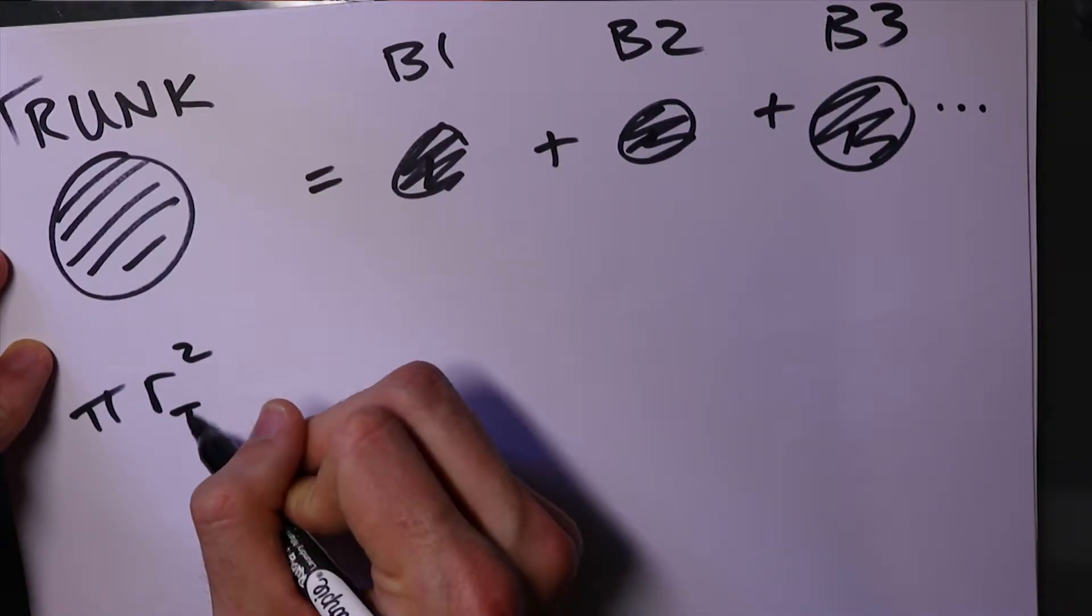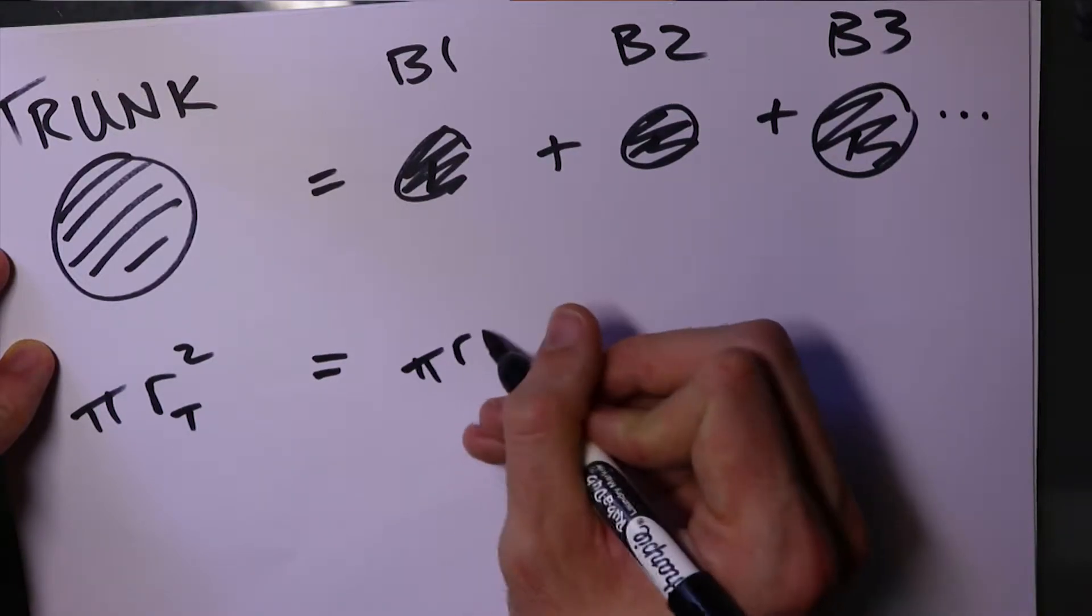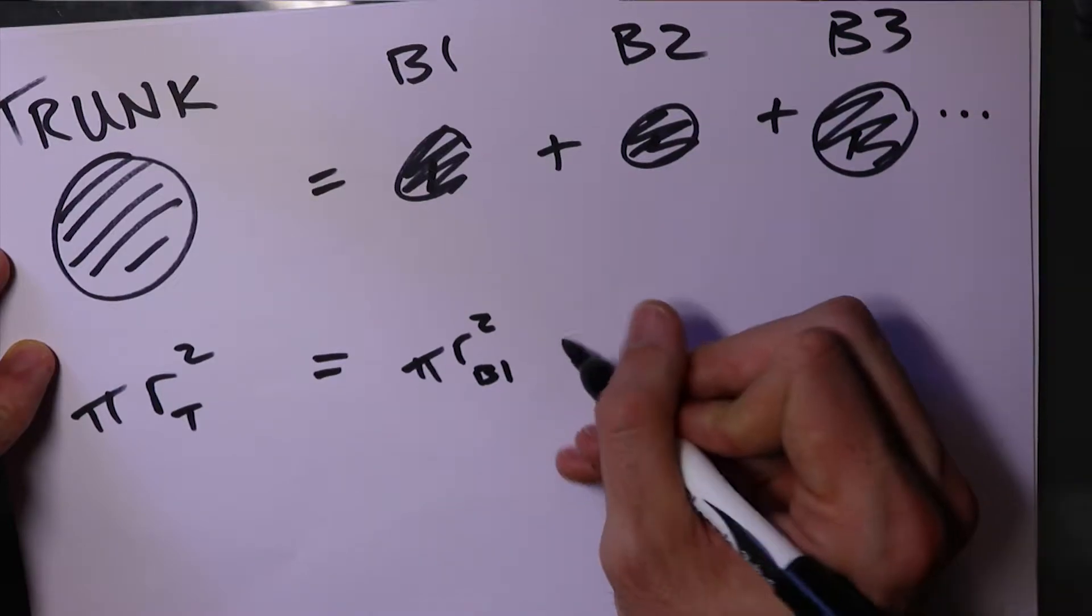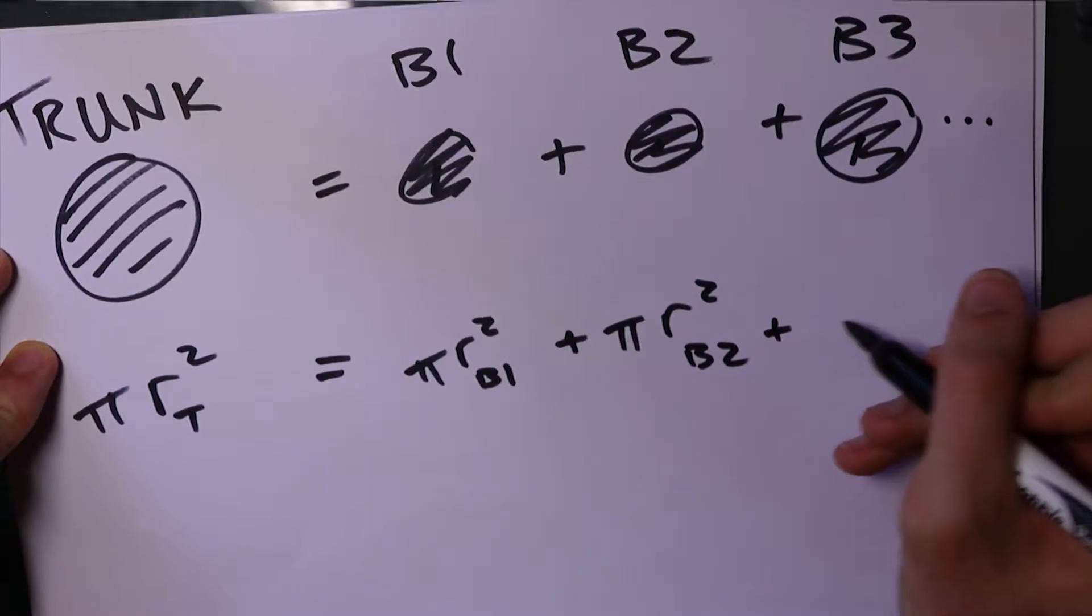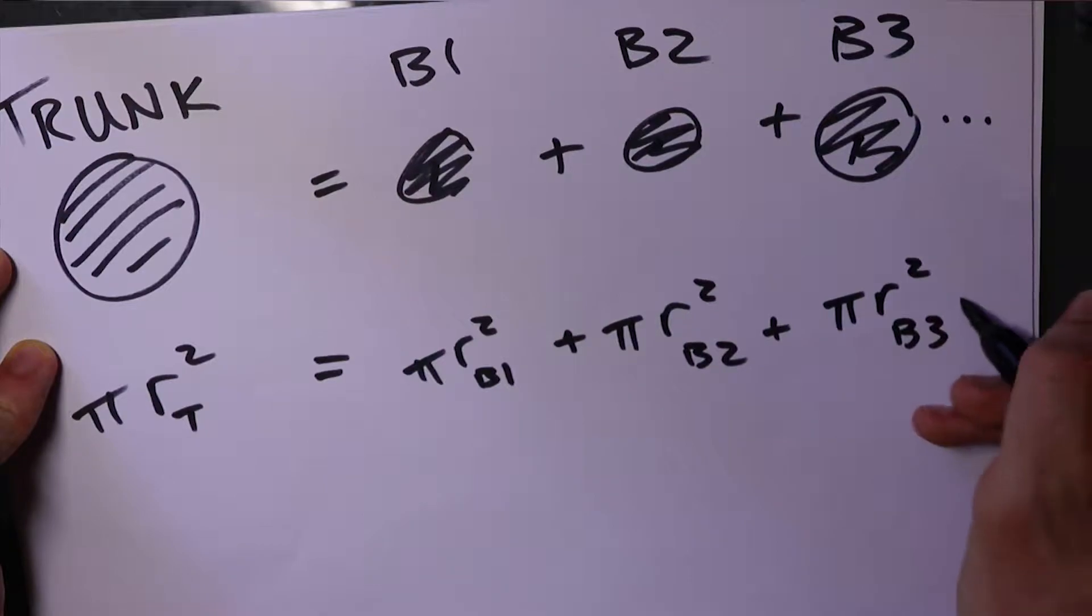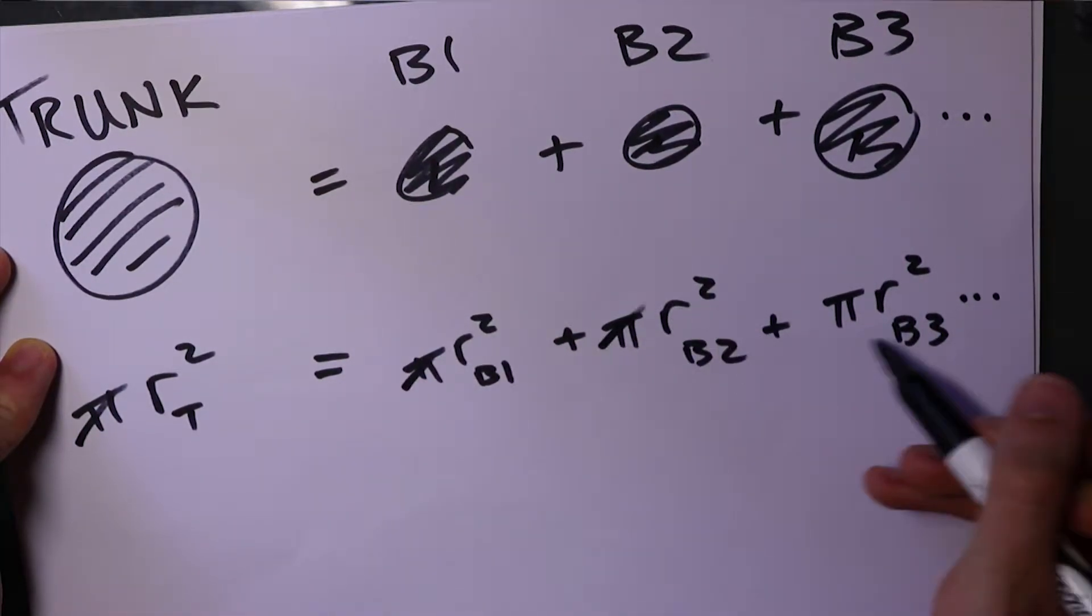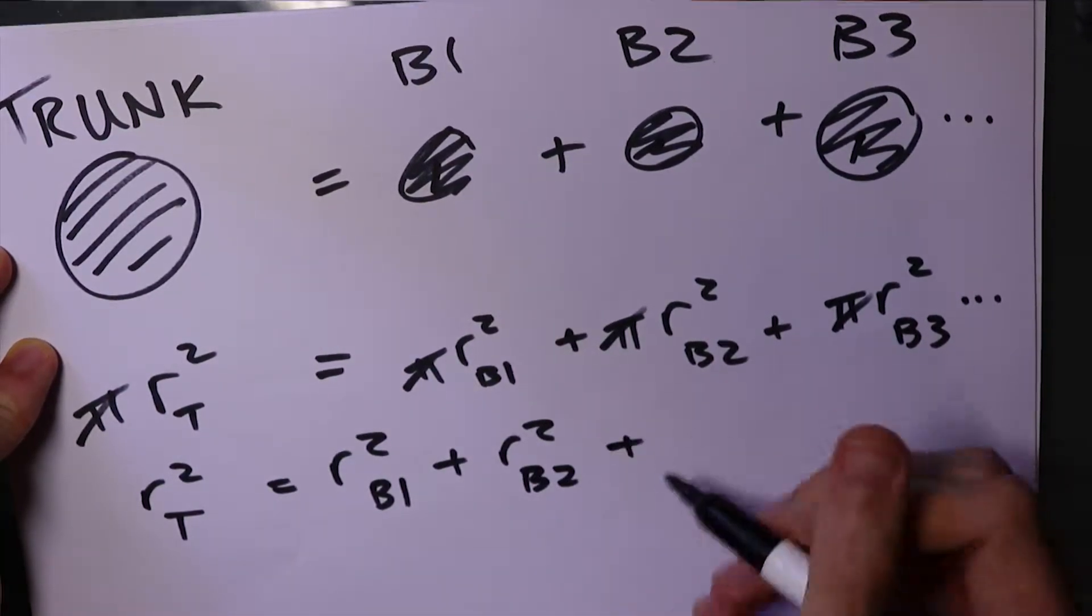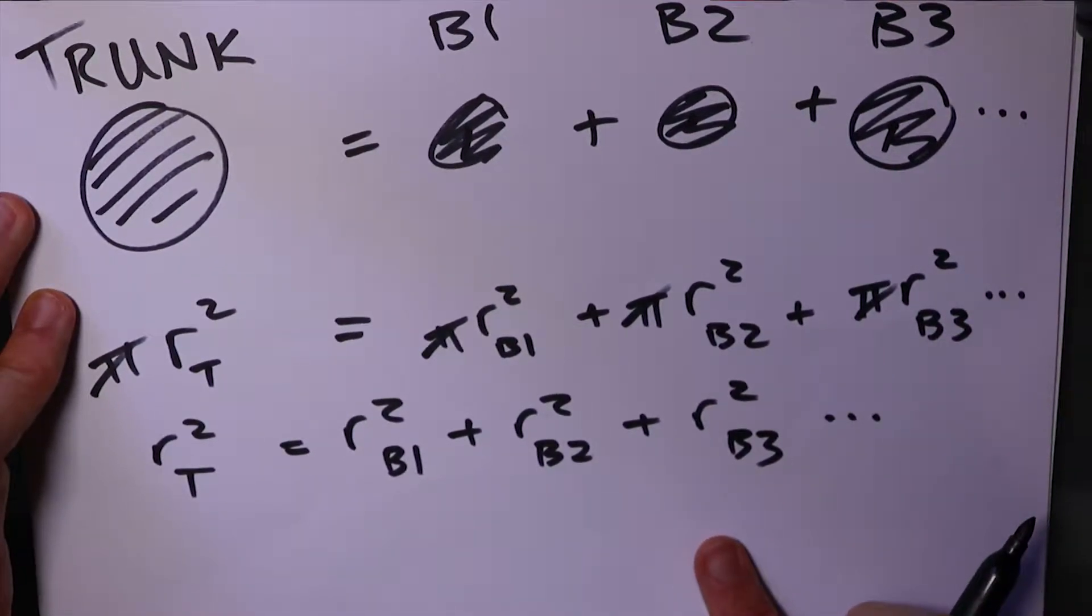So here the radius, that's the radius of the trunk. Now that's going to equal pi r squared, using the radius of the branch, first branch. Again, for the radius of the second branch. And then again, for the radius of the third branch. But like I said, there could be more. Now we're just going to cancel out pi, just divide by pi.